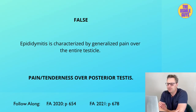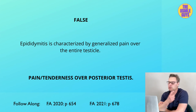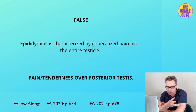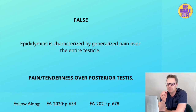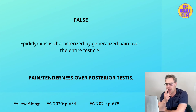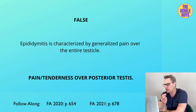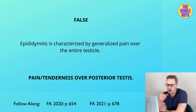Let's talk about epididymitis. This is inflammation of the epididymis, and it presents with localized pain and tenderness over the posterior aspect of the testes, as well as pain relief with scrotal elevation — that is known as a positive Prehn's sign. In younger males, the most common causes of both epididymitis and orchitis are chlamydia trachomatis and Neisseria gonorrhea, while in older males the two most common causes are E. coli and Pseudomonas.